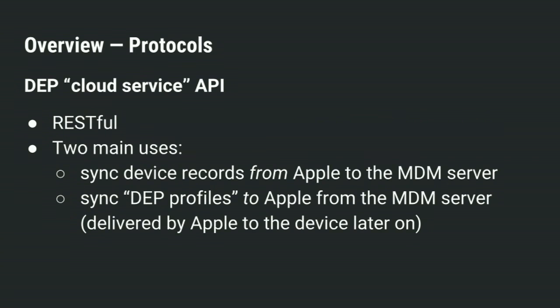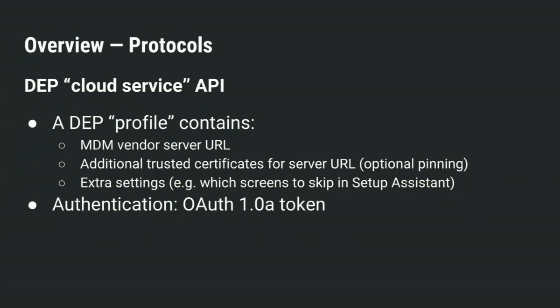The DEP cloud service API is another RESTful API with two main use cases. One is to sync device records — when a reseller or Apple adds a new device into their DEP database, those records are pulled into the MDM product over this API. The other is the MDM vendor pushing back a DEP profile, which is delivered to the device the first time it boots. That DEP profile, a JSON payload, contains three things: the MDM server URL, any additional certificates needed for pinning, and setup assistant configuration. Authentication is handled with OAuth between the MDM server and Apple.